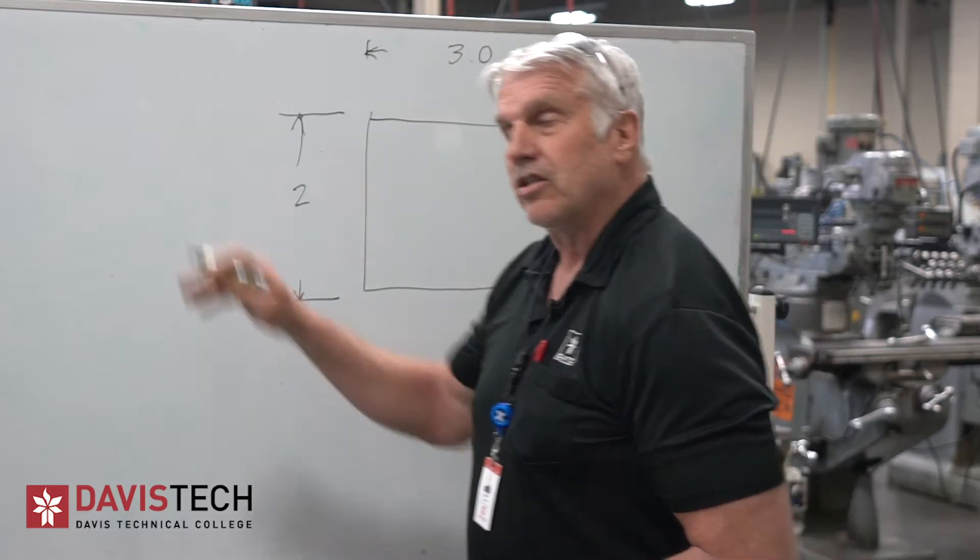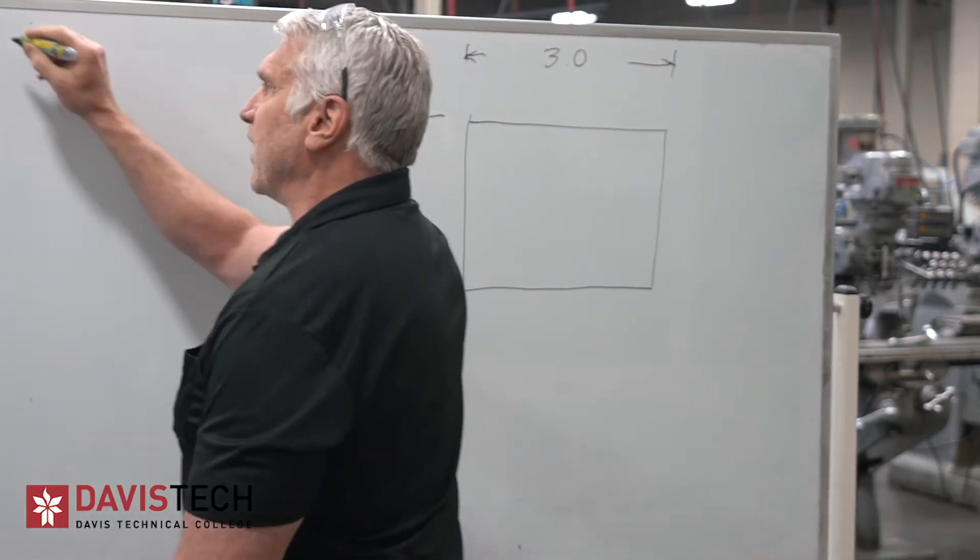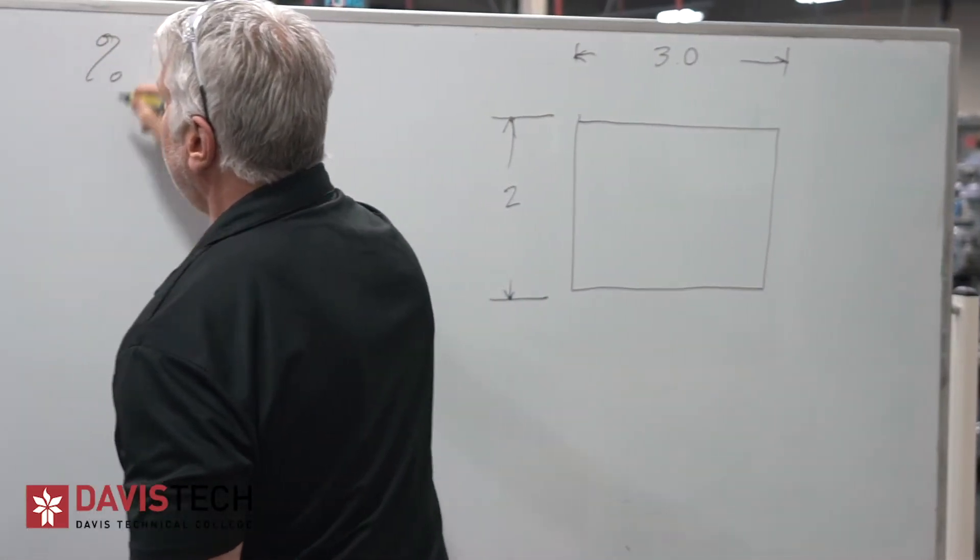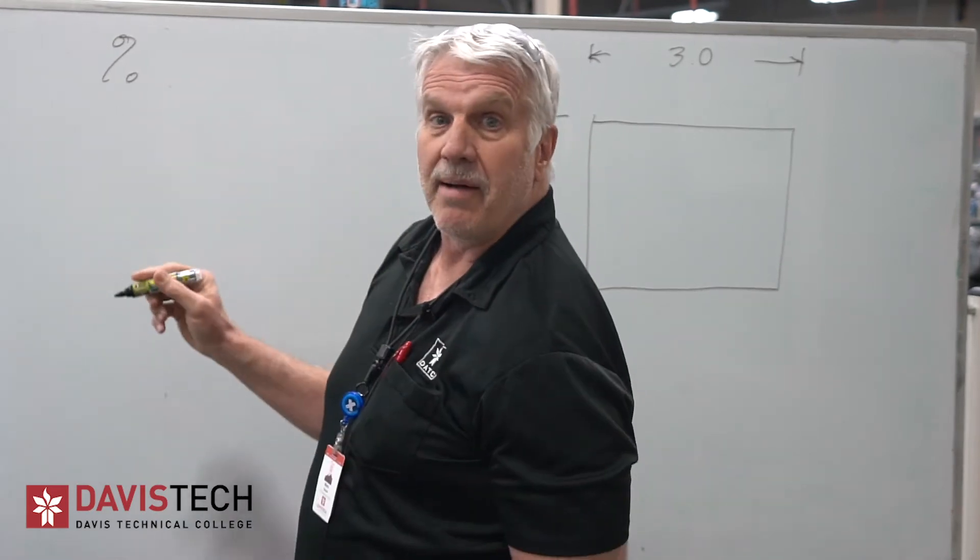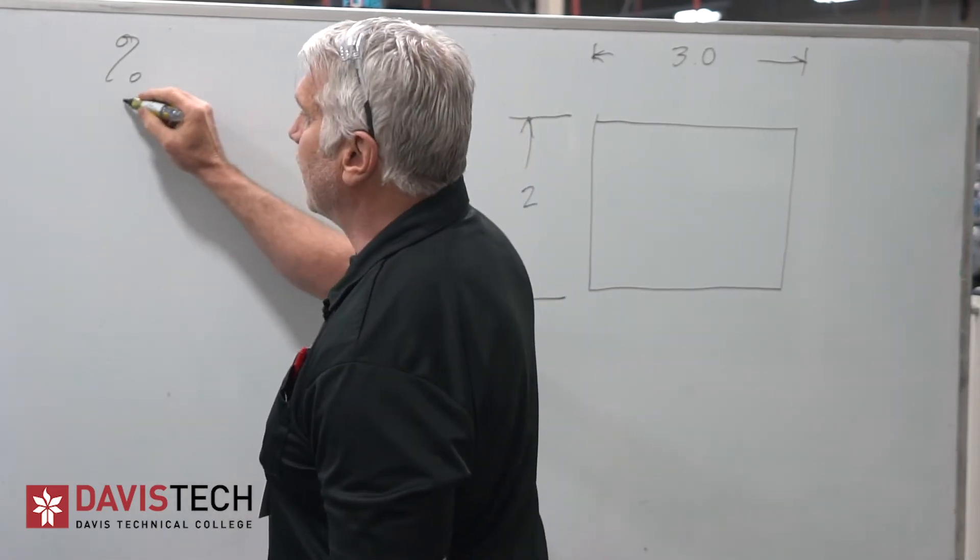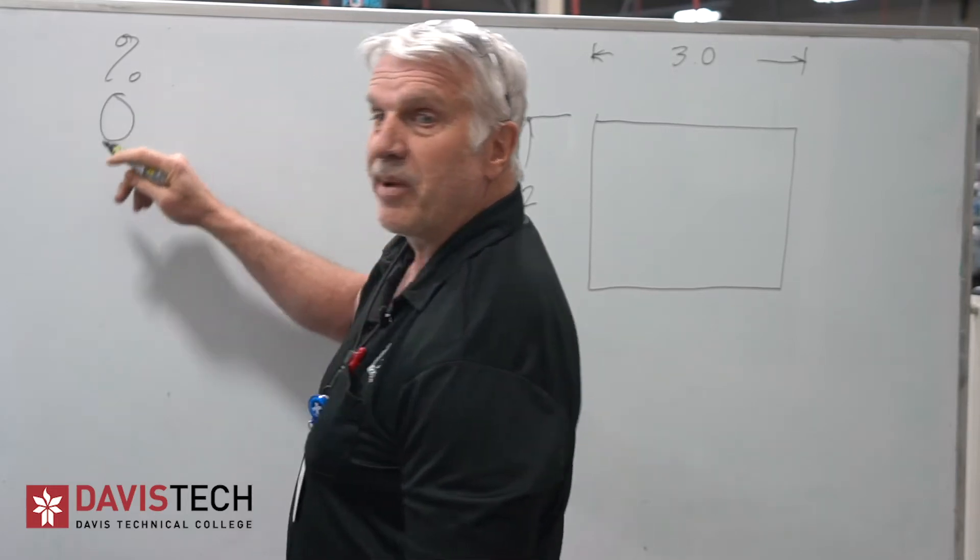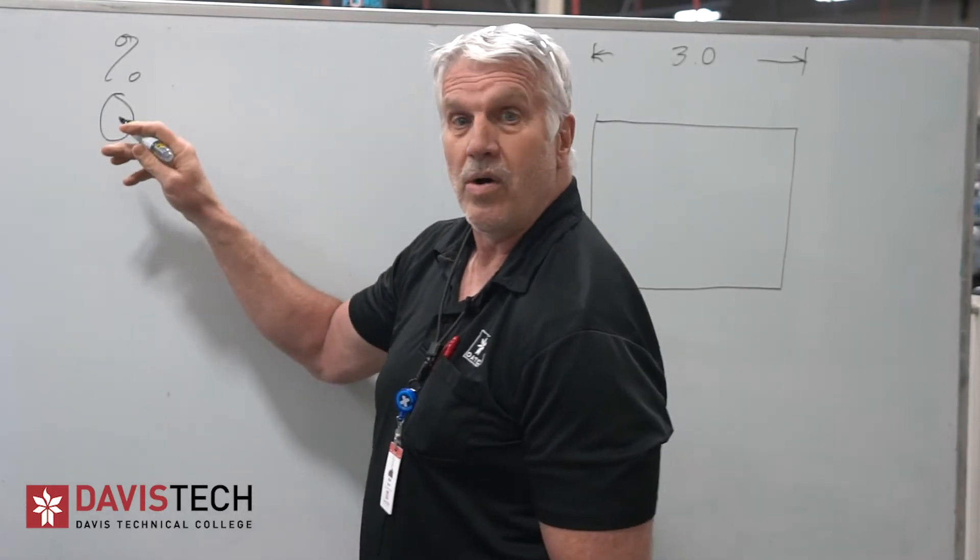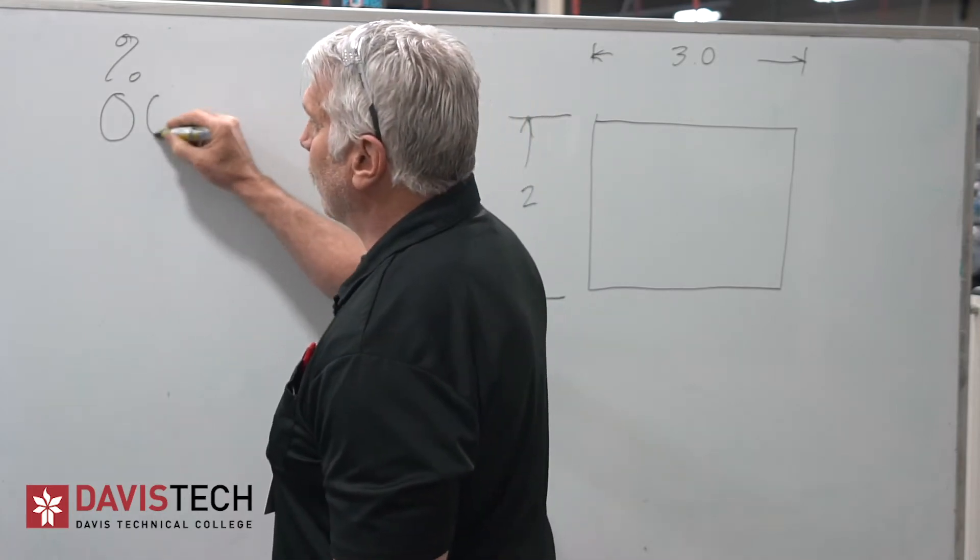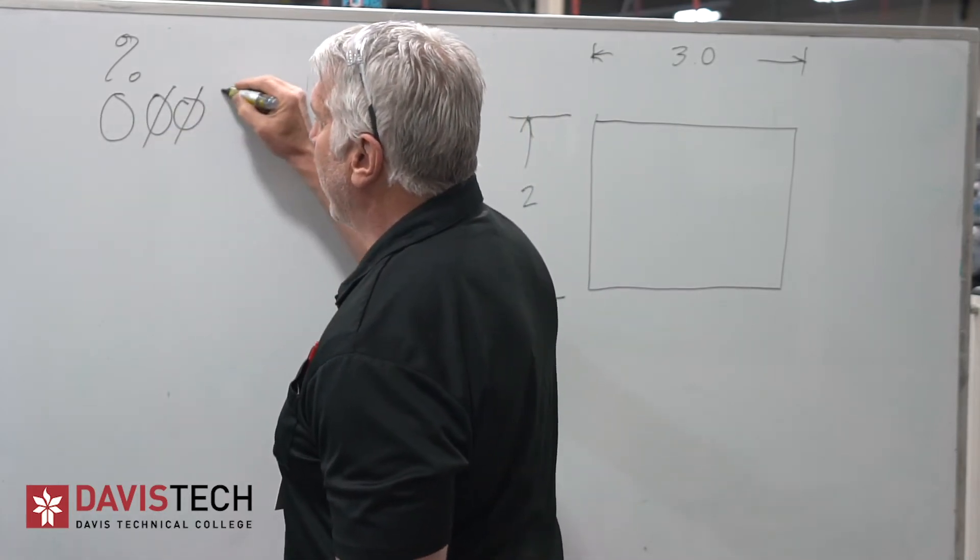To start off, we're going to start our program with a percent symbol. And then we give it a program number. We'll just call this program, and this will be the only time you use the letter O. And we're going to call this program O1.